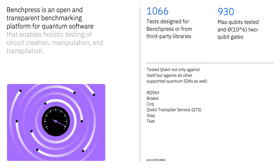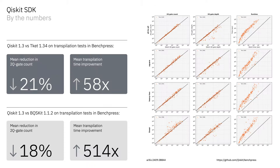Rust is widely recognized as an efficient and performant language and one of the fastest-growing languages on GitHub, offering key advantages in memory safety and management that translate into speed. With these updates we've seen a more than 60x improvement in runtime over Qiskit 1.0, released in February this year. Earlier this year we created BenchPress — a transparent, open-source benchmarking tool based on industry-standard tests. It benchmarks the ability of quantum SDKs to perform important tasks like generating and transpiling circuits, both in terms of speed and quality as measured by gate count.